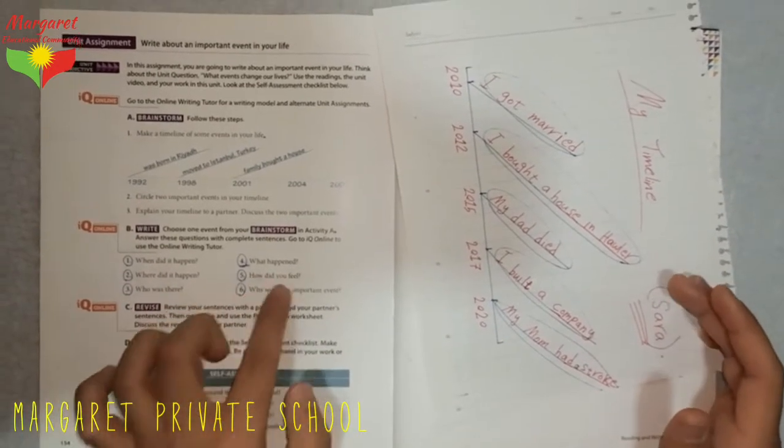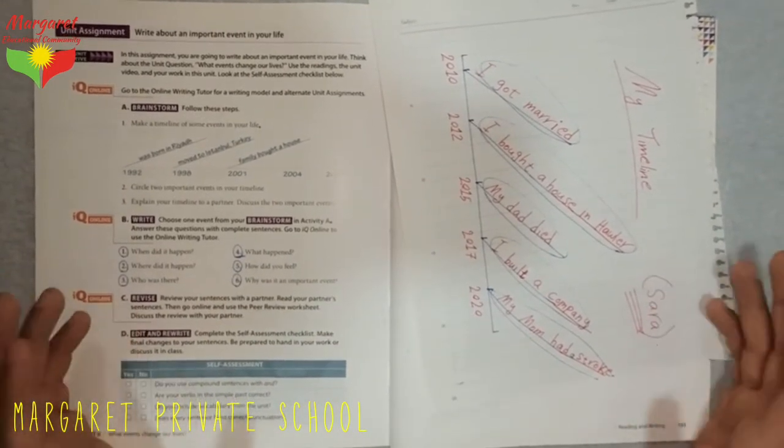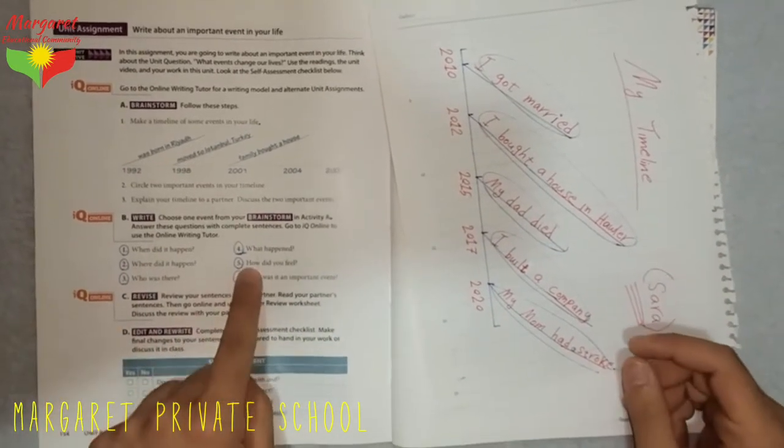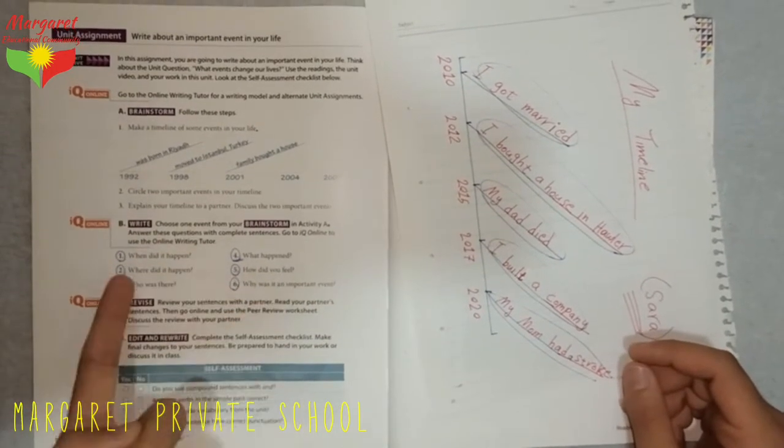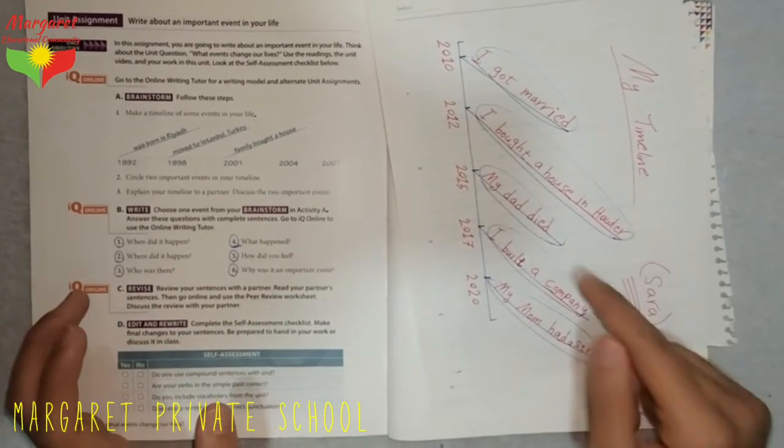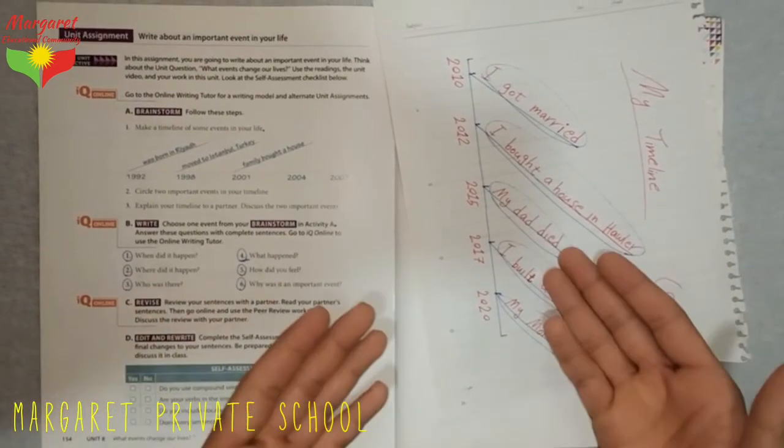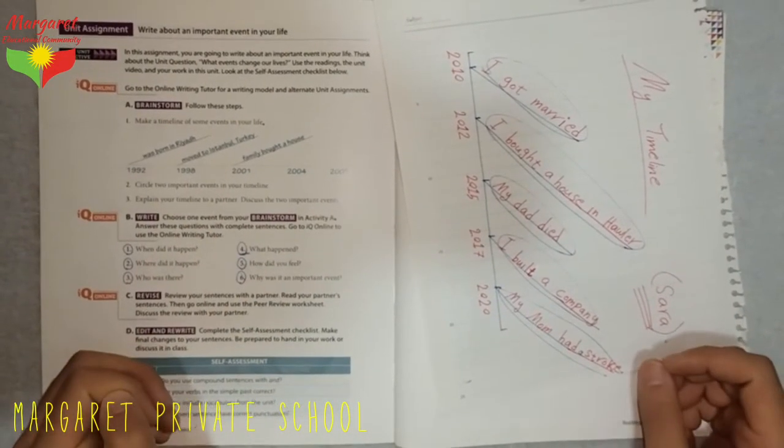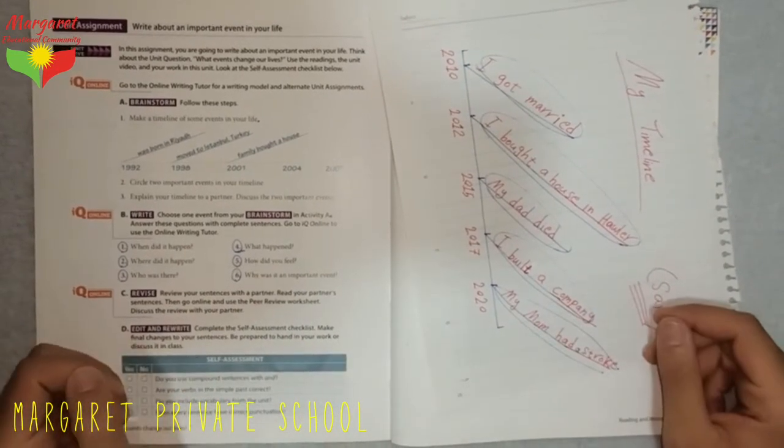Number five, how did you feel? How did you feel when this event happened? For example, I felt sad, I felt heartbroken, these kind of things. But give a detail. Do not answer with only one sentence. Do your best to write down at least two sentences as an answer for these questions. Number six, why was it an important event? Why was this event an important event in your life? Maybe it gave you too much pain. You can't forget that. Or maybe the event helped you to change your life completely.